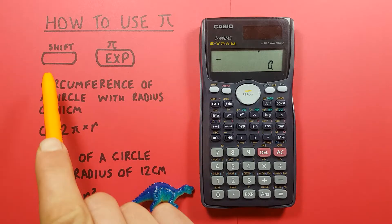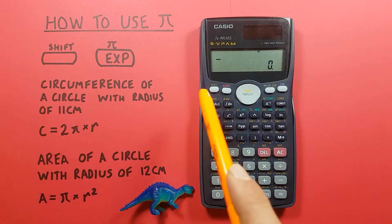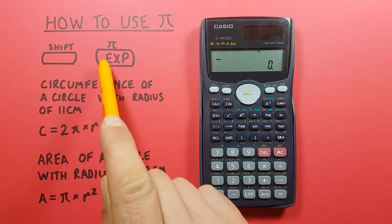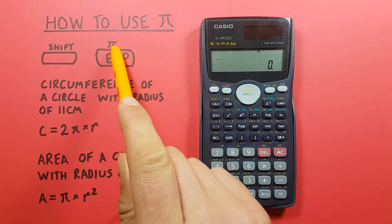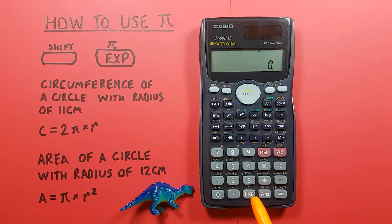To do this we'll be using the shift key, looks like this, located here, as well as the exp key with the secondary function of PI located down here in the middle at the bottom.